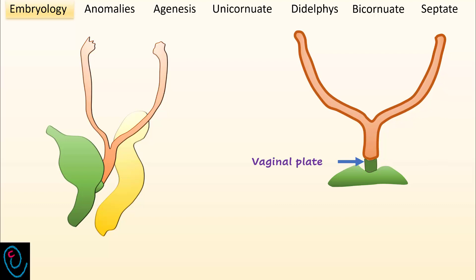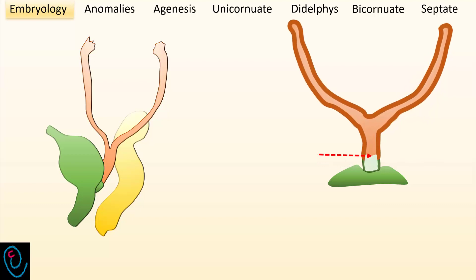The sinovaginal bulbs proliferate, forming a solid vaginal plate. The central cells of this vaginal plate will degenerate, forming a cavity. The canal will later open cranially to communicate with the upper vagina, and open caudally to communicate with the urogenital sinus.